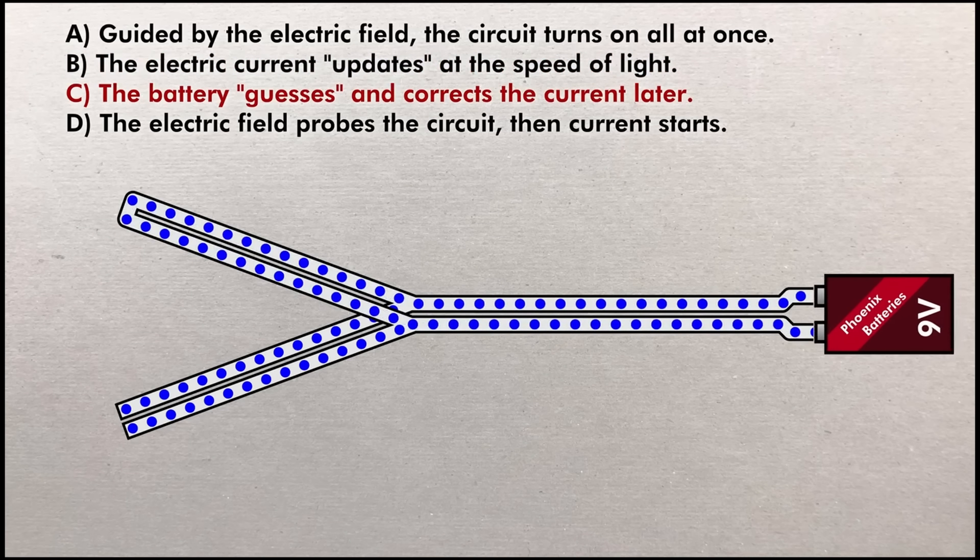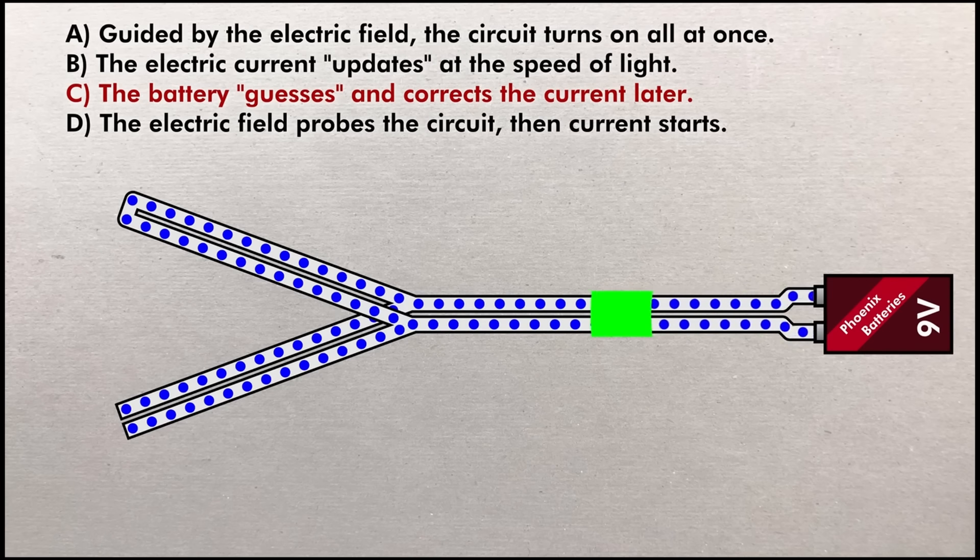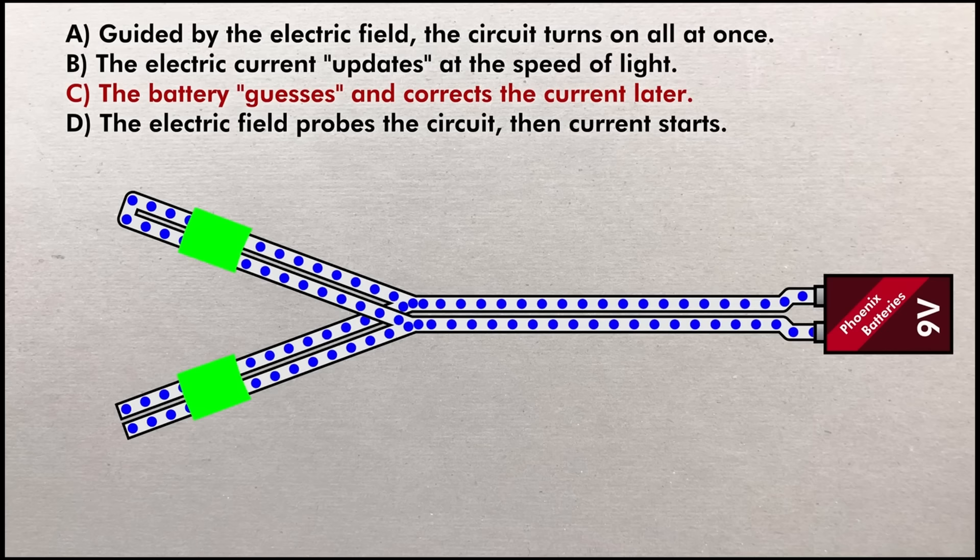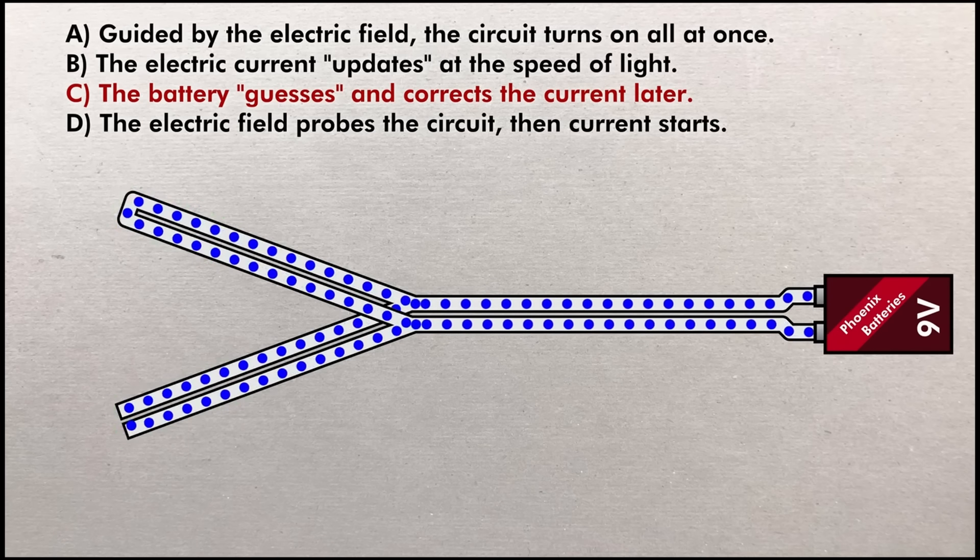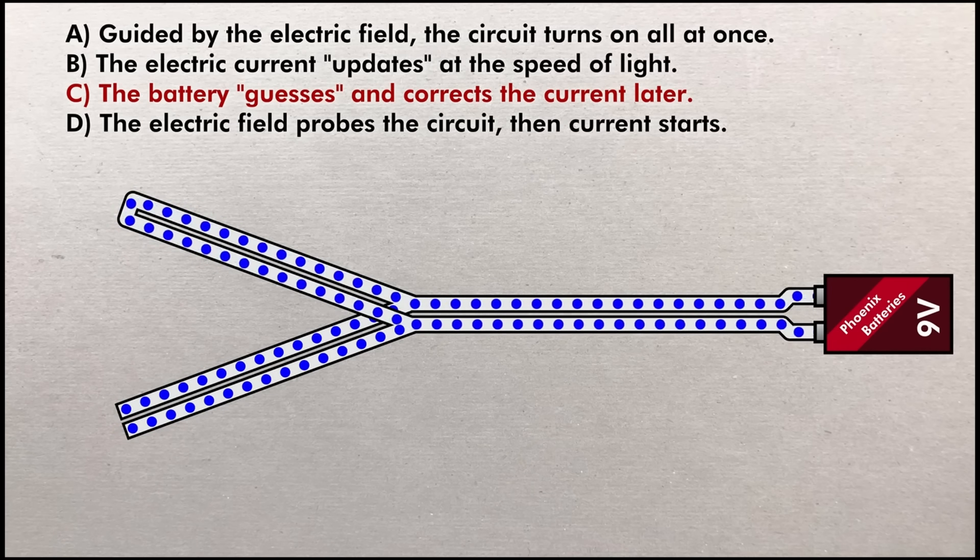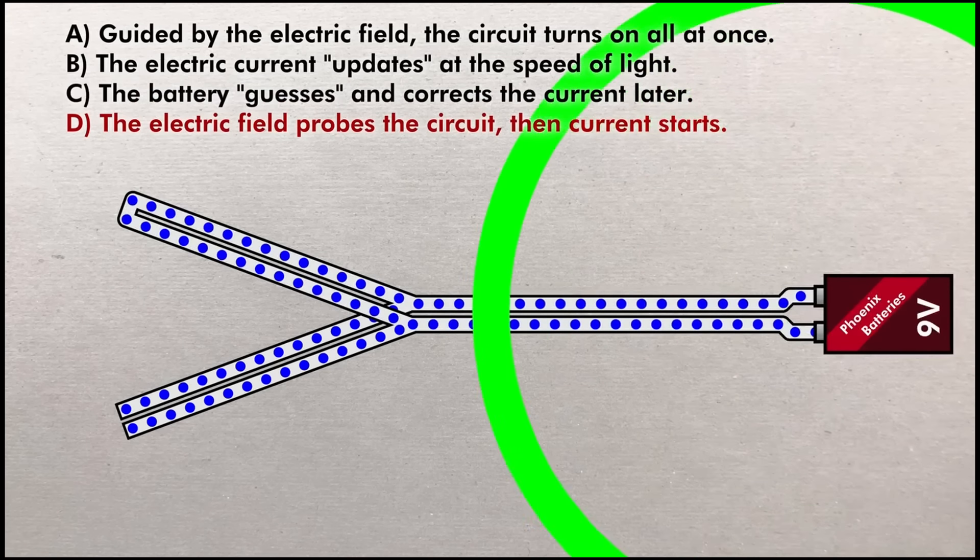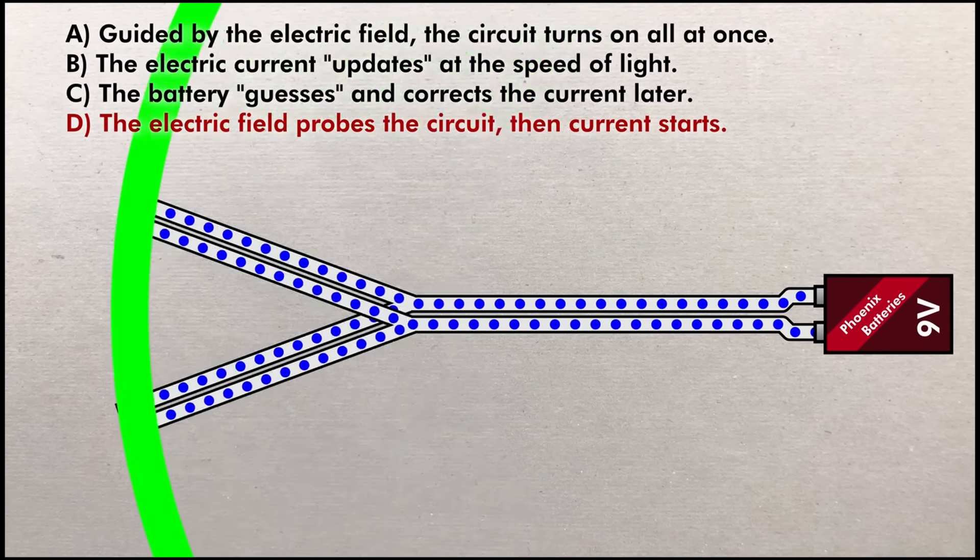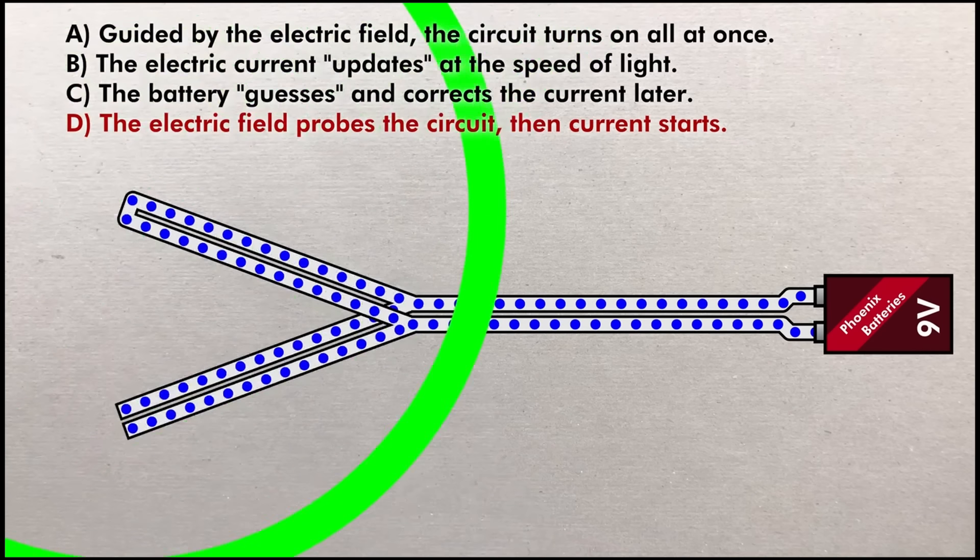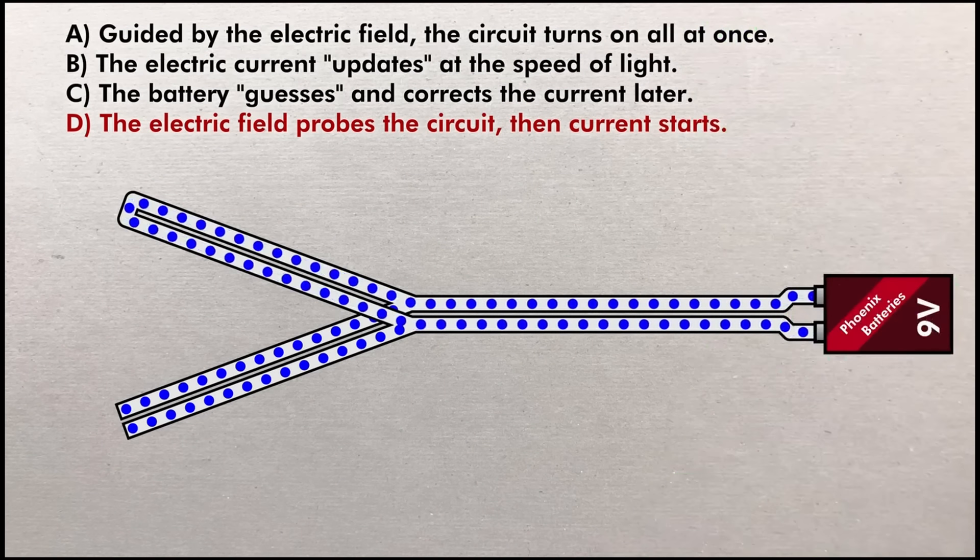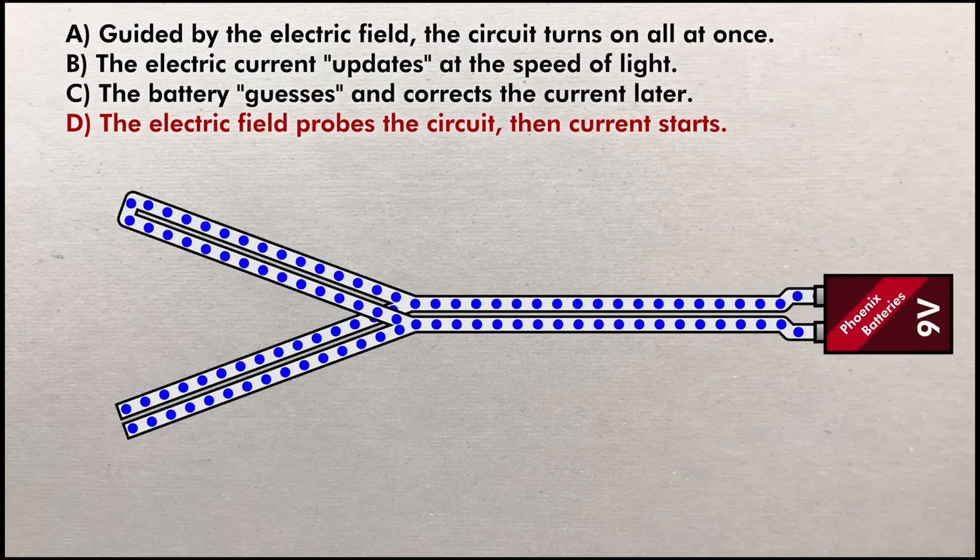Option C: the battery pumps an arbitrary amount of current into the wire and despite one branch being disconnected the current that's flowing splits when it gets to the fork and goes down both wires. Although this is initially wrong it eventually stabilizes. Option D: initially nothing happens. The battery updates the electric field at the speed of light and once information has returned from the other end of the circuit the correct amount of current starts to flow in the connected leg all at once.